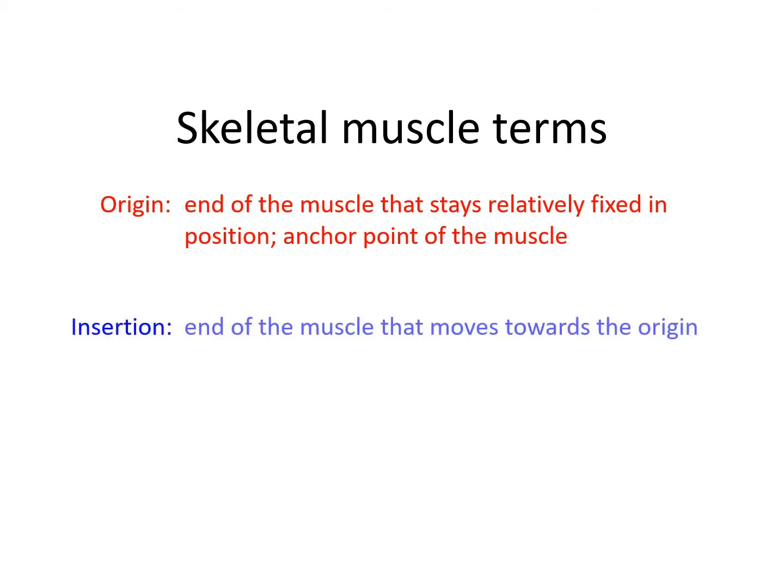The person that stays put would be the origin, and the person that does the moving would be the insertion — this is the end of the muscle that moves towards the origin. Now, as the muscle shortens, it becomes wider, and at its widest point the particular portion of the muscle is called the belly. These are three terms you'll need to know when you look at the muscles themselves in a later video.